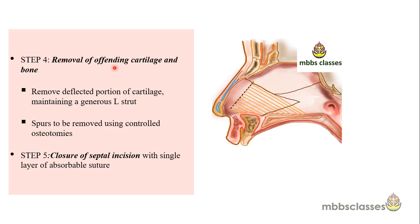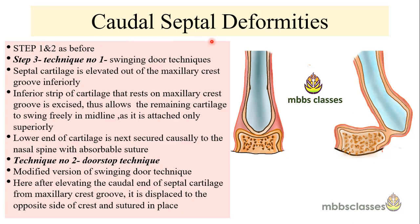After the mucoperichondrial flaps are elevated satisfactorily, visualizing all sides of deflection, the offending deviated cartilage and bone is removed. Removal of cartilage is always done keeping in mind to leave behind a generous L-strut — a strip of cartilage approximately 1 to 1.5 centimeters wide — to maintain the nasal tip. Over-resection must be avoided as it leads to complications like deformity, nasal tip ptosis, and recurrent nasal obstruction. Spurs are removed using controlled osteotomies. Finally, the submucoperichondrial flap is irrigated with saline and antibiotic solutions and re-approximated using absorbable sutures.